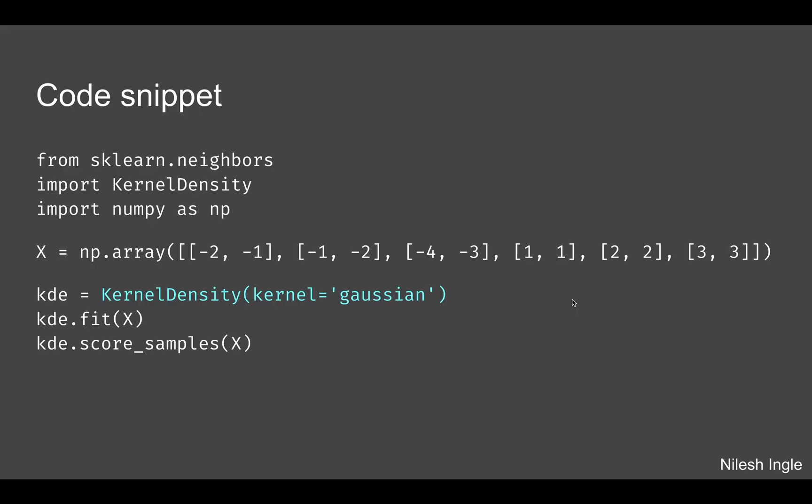Finally, in the code snippet we have the standard method of implementing kernel density. We specify KernelDensity, and in brackets we can specify which kernel we'd like to use. Here I'm specifying Gaussian. We fit the data to X and then get the scores that we can plot.